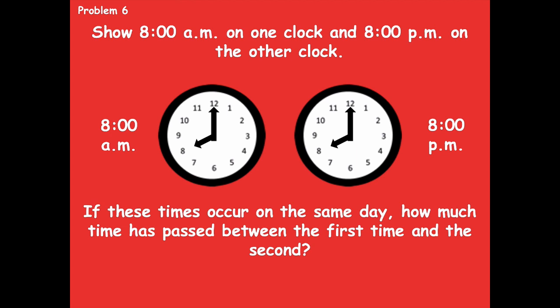How many hours passed? 12 hours. We could start at 8 o'clock and count all the way around to 8 o'clock again, putting up a finger every time: 9, 10, 11, 12, 1, 2, 3, 4, 5, 6, 7, 8 — that's 12 hours. Or we can say that 12 hours is half a day. When the same hour appears in both a.m. and p.m., it's going to be 12 hours apart.